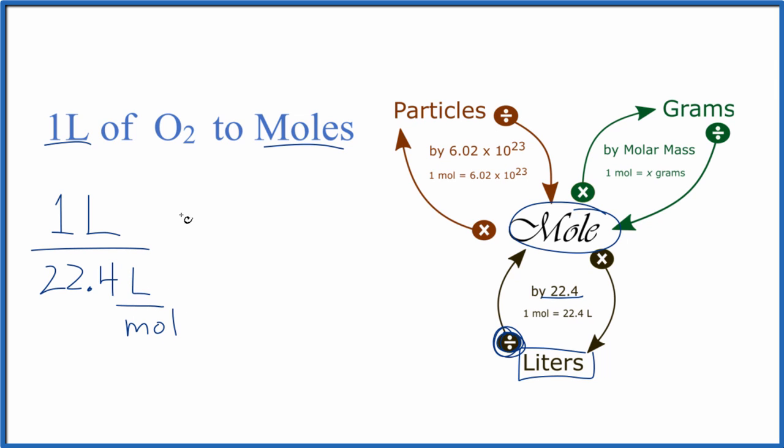So when we do this, we cancel out. We end up with one divided by 22.4, 0.045 moles.